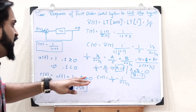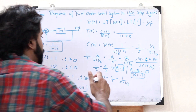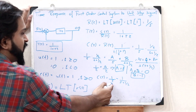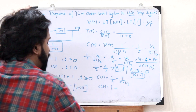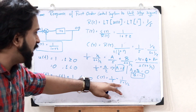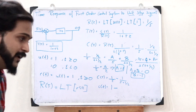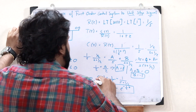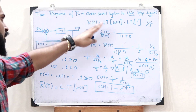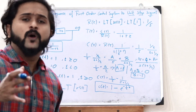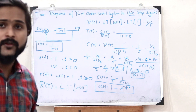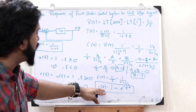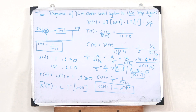To find c(t), we take the inverse Laplace transform. The inverse Laplace transform of 1/s is 1, and the inverse Laplace transform of 1/(s + a) is e^(−at). Therefore, c(t) = 1 − e^(−t/τ). This is the time response of a first order control system to a unit step signal. I've done a detailed video on inverse Laplace transforms — the link will be in the description below.